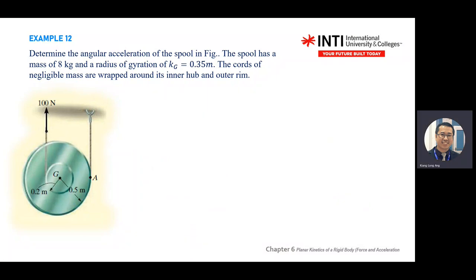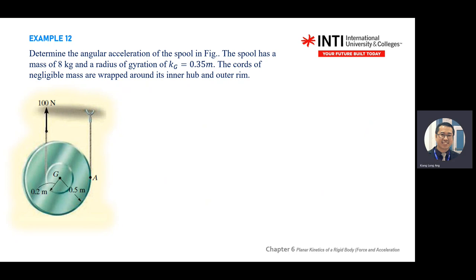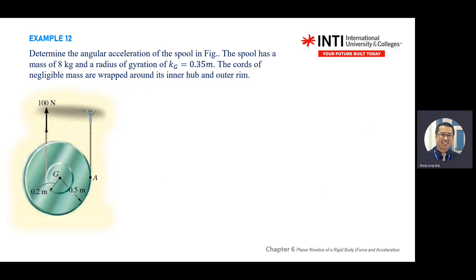One more example with a spool — a round body with two positions (outside radius and inside radius). Determine the angular acceleration of the spool, which has a mass of 8 kilograms and a radius of gyration of 0.35. The chord mass is ignored. The spool is pulled with 100 Newtons.